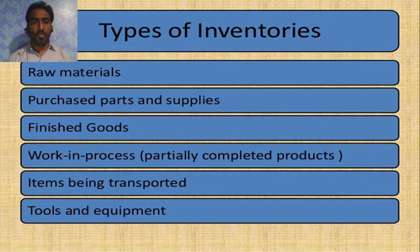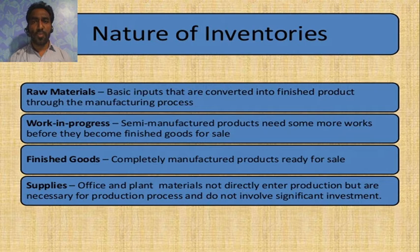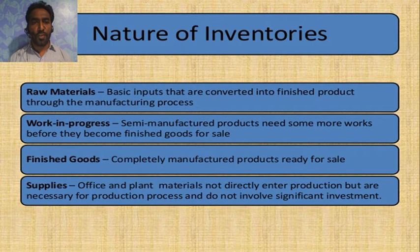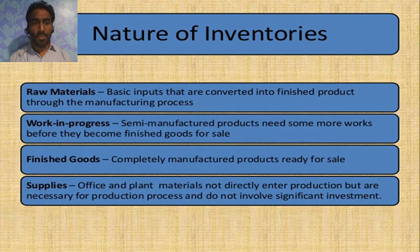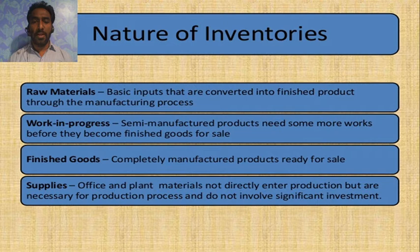Types of inventory include raw materials, purchased parts and supplies, finished goods, work-in-progress, items being transported, and tools and equipment. In terms of nature: raw materials are the basic inputs converted into finished products through the manufacturing process; work-in-progress are semi-manufactured products needing more work before becoming finished goods; finished goods are completely manufactured products ready for sale; and supplies are office and plant materials not directly entered into production but necessary for the process.